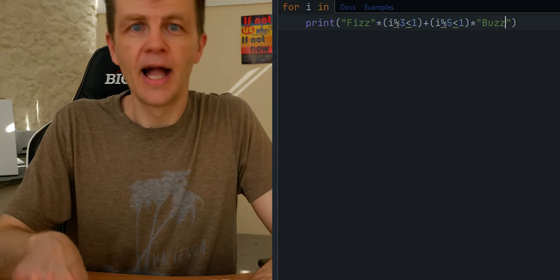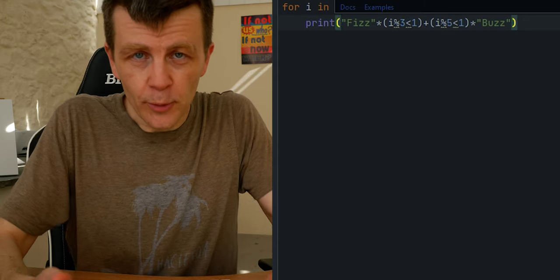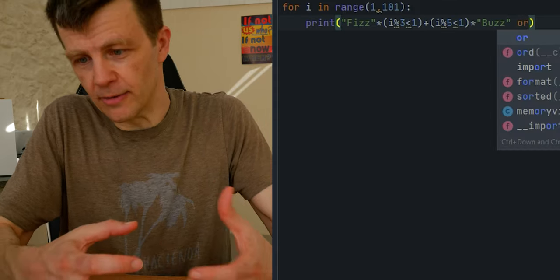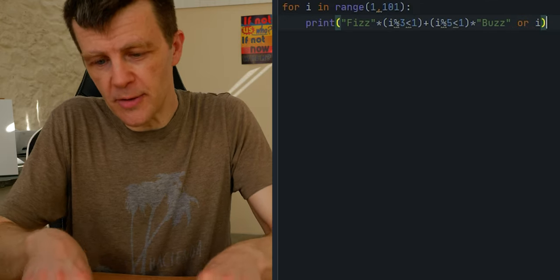So we'll either get fizz or buzz or fizz buzz in that section that will print what we wanted to print, depending on what number we're on. And if none of that is true, if we don't get any of that, we'll get the number that we wanted.